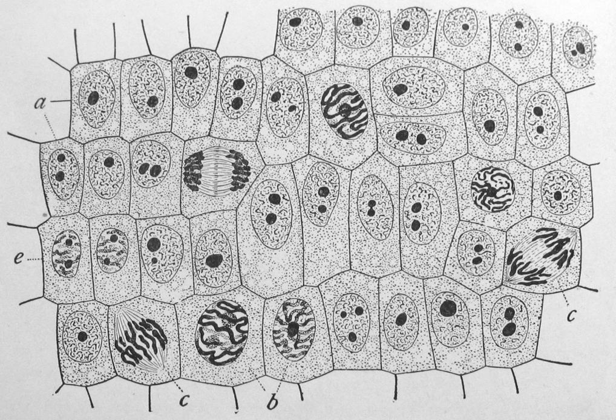Cells are of two types: eukaryotic, which contain a nucleus, and prokaryotic, which do not. Prokaryotes are single-celled organisms, while eukaryotes can be either single-celled or multicellular.